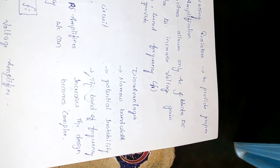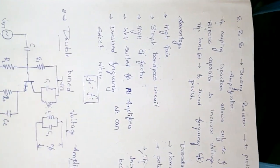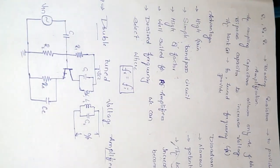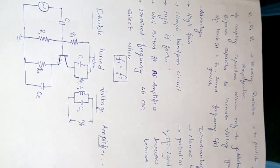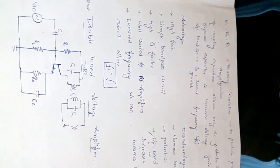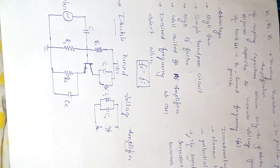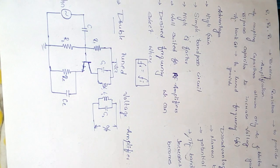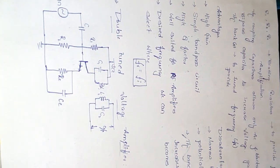The disadvantages are: narrow bandwidth, potential instability. The band of frequency increases, the design becomes complex. Coming to the double tune amplifiers, the disadvantages that is the narrow bandwidth and potential instability in single tune amplifier we can overcome using the double tune amplifier.